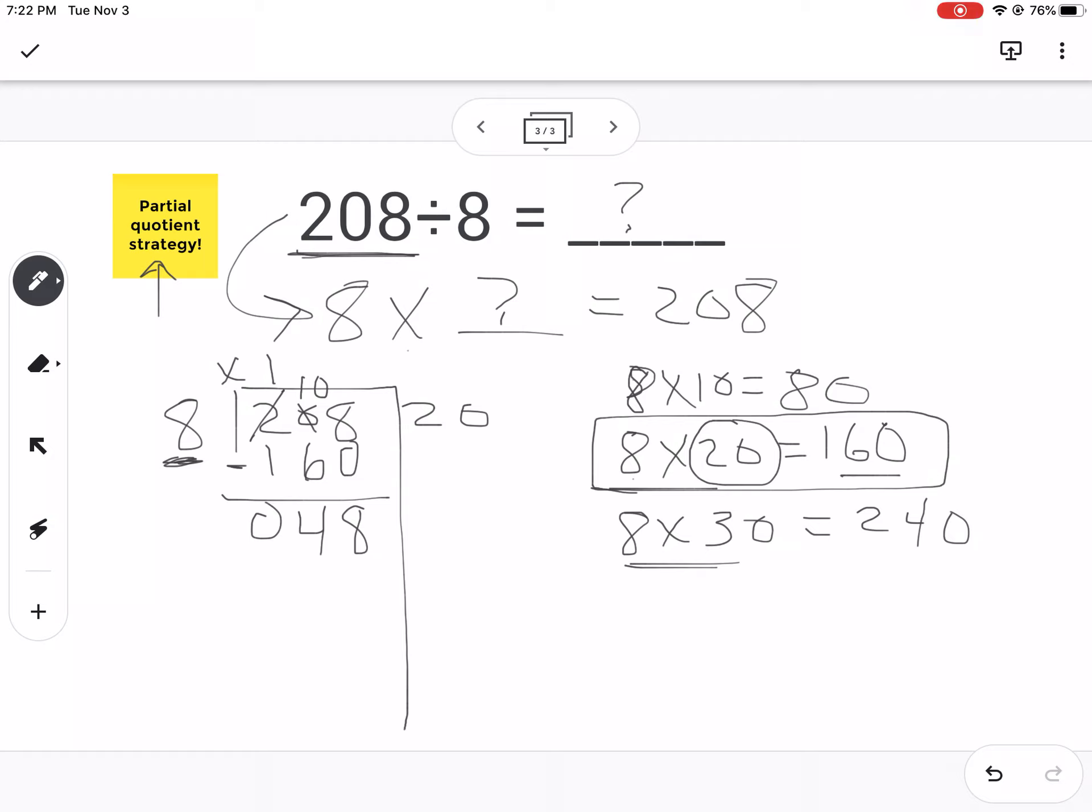So now I'm at 48, and I'm going to do it again. 8 times what number is 48? Oh man, I know that fact. 8 times 6 is 48. So I can use this fact. I'm going to take the 6, put it right here. Put the 48 under here. Yay, I have 0 left over.